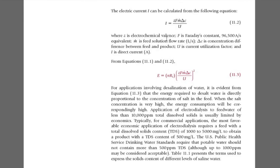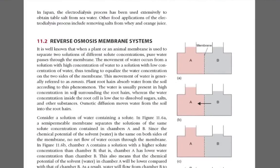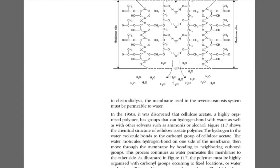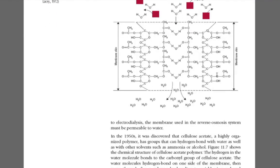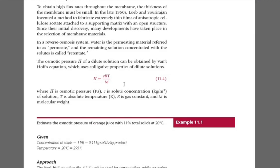This is a reverse osmosis membrane system, showing how water moves through a cellulose acetate membrane. Chemically, temporary hydrogen bonds form between water molecules and the membrane, then pass on to the next site and finally exit the other end. Moving on to the Van't Hoff equation, which is used to calculate the osmotic pressure of a dilute solution. Osmotic pressure is denoted by the Greek symbol π (capital pi).